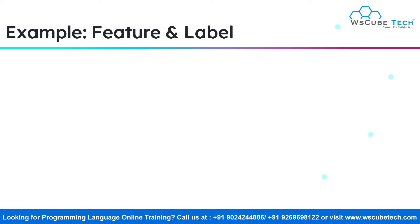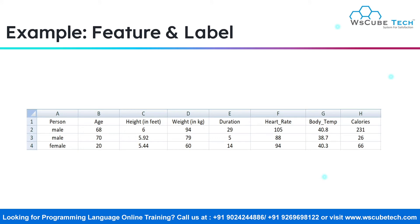Let's take another example. Now consider this dataset by the name exercise.csv. Likewise, each column inside this dataset is called a feature. So what are the features here? Person, age, height, weight, duration of the exercise, heart rate, body temperature, and lastly, calories. So these are the features of your dataset.